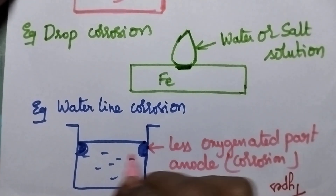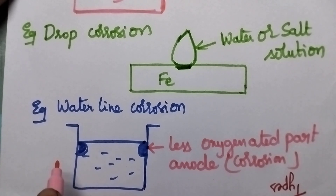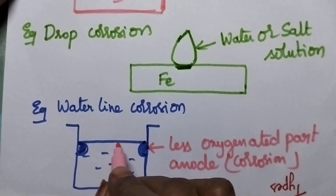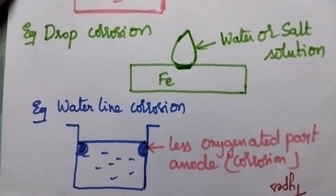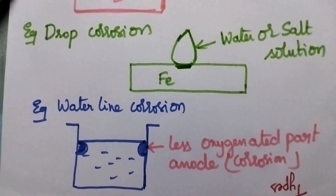So, which part of the water tank undergoes corrosion? The line just beneath the water meniscus undergoes corrosion. All these are good examples of differential aeration corrosion. If you like the video, don't forget to like, share and subscribe. Thanks for watching. Have a nice day.